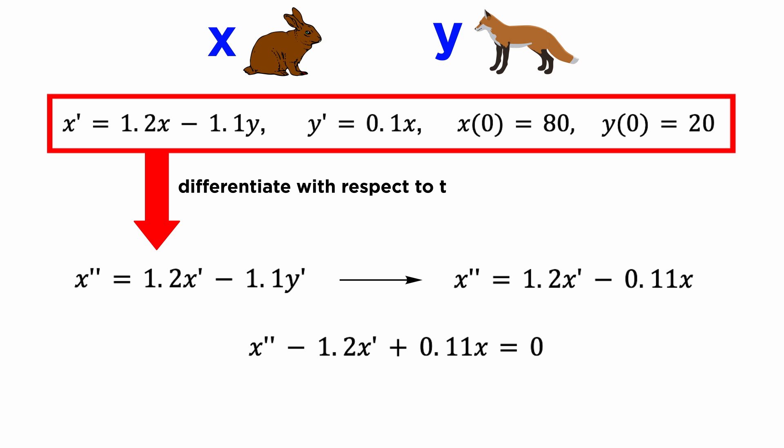Before we go ahead and solve this, we need to know the initial conditions for x and dx/dt, which we do for x, but to find x prime of 0, we can substitute into our dx/dt equation to get that x prime of 0 is equal to 74.